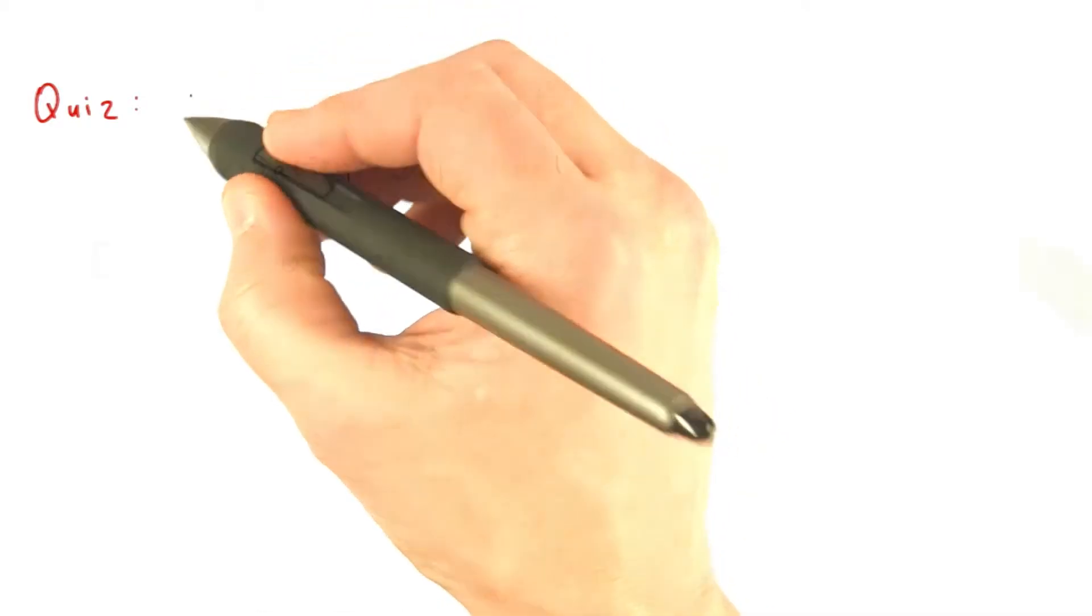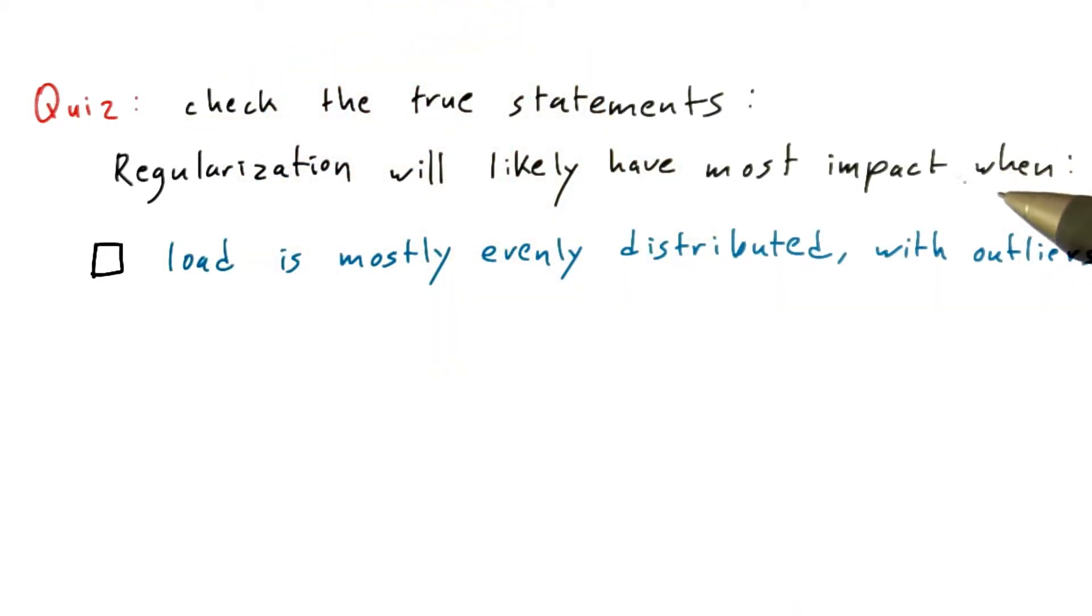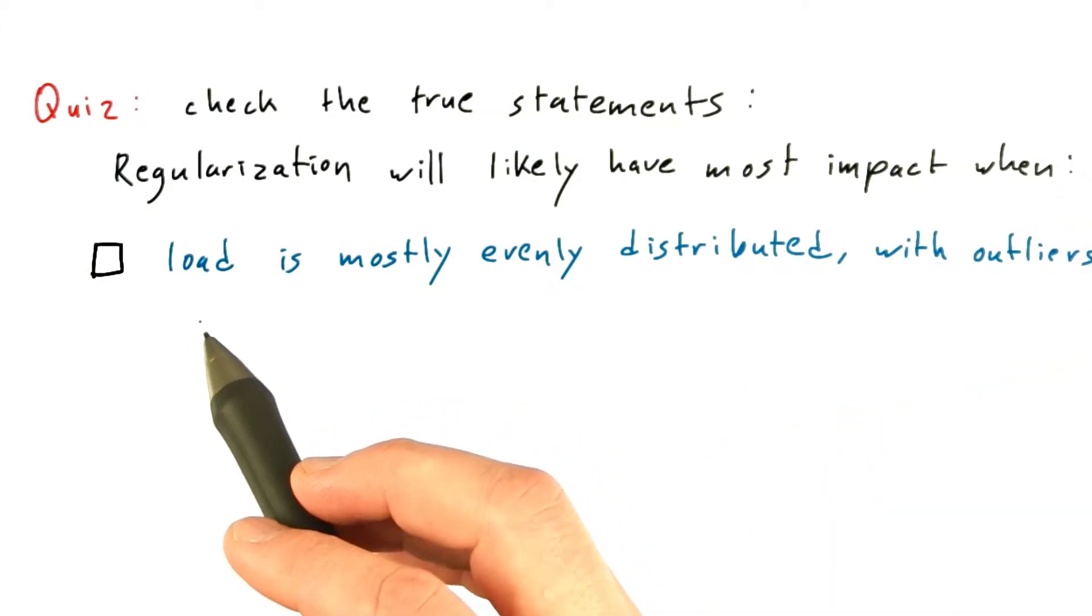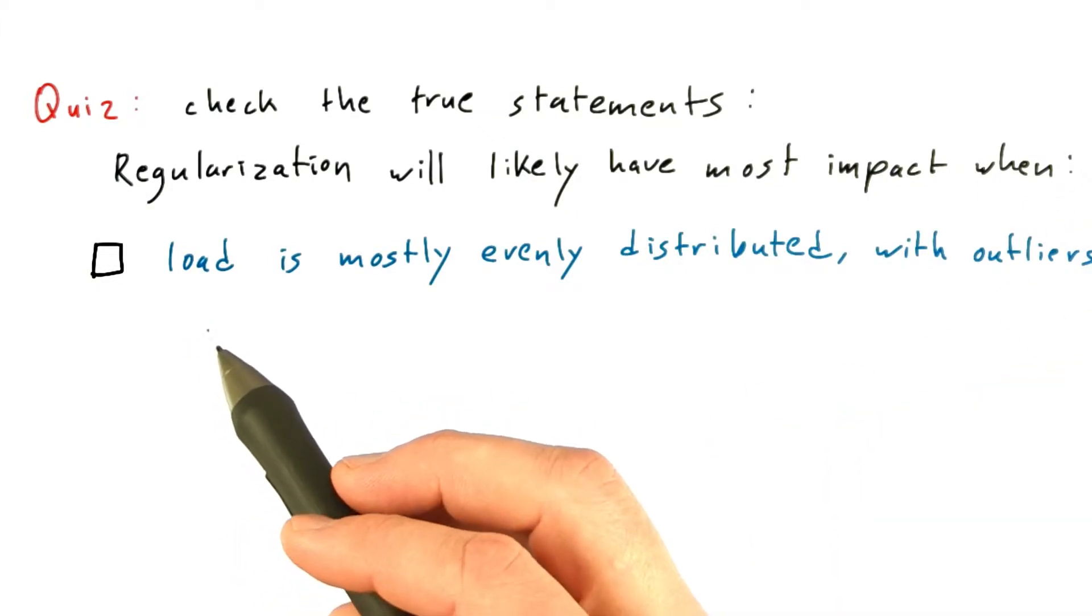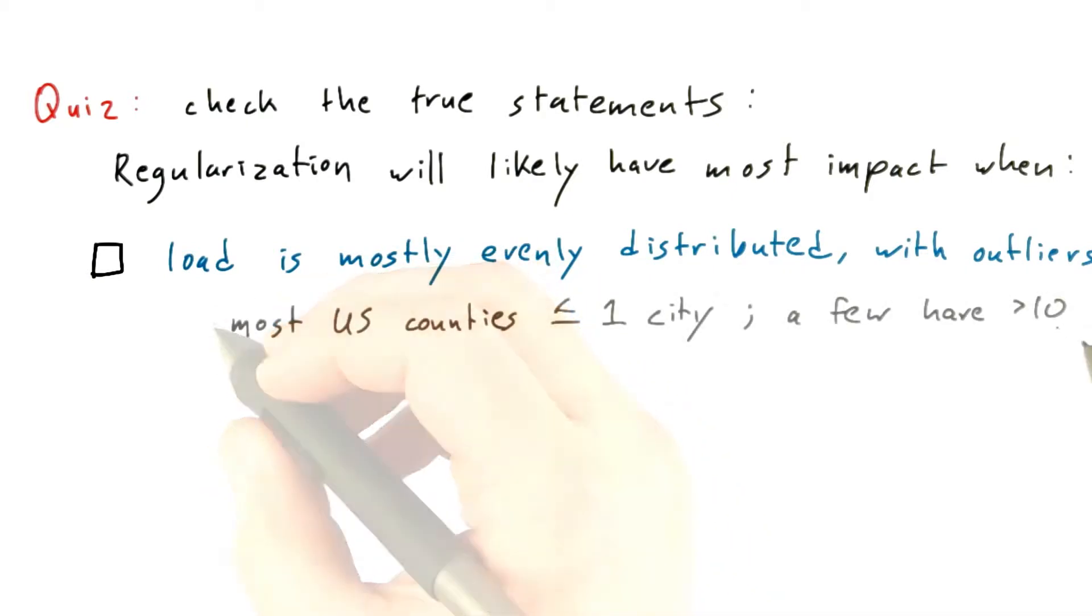Let's have a quiz on regularization. Check the statements that are true. Regularization will likely have the most impact when the load is relatively evenly distributed among tasks but with some significant outliers. For example, most U.S. counties contain at most one city, but there are a few that have dozens of cities.